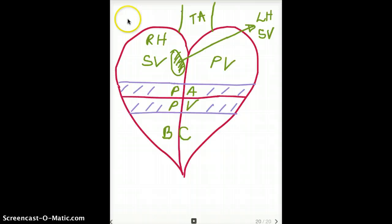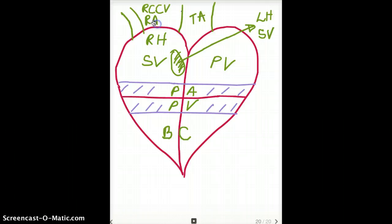Last but not the least, where is the superior vena cava coming from? So it's coming from the common cardinal veins, right? It's going to be the right common cardinal vein and the right anterior cardinal veins.